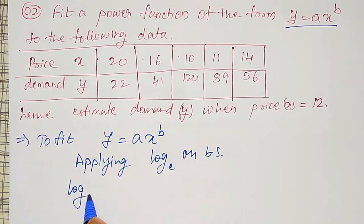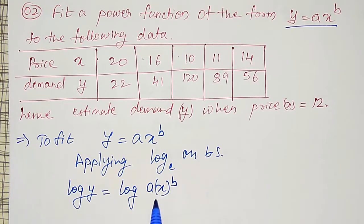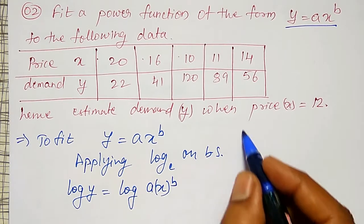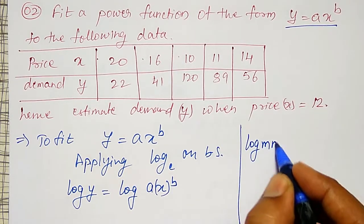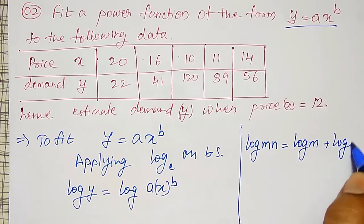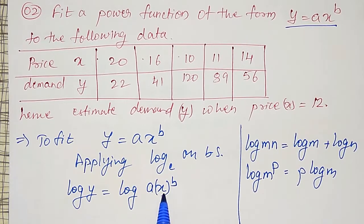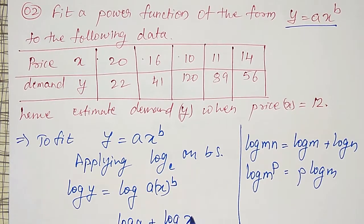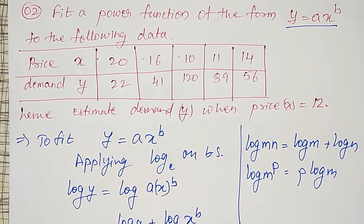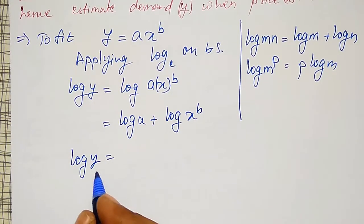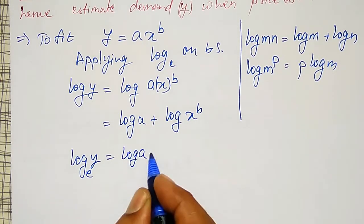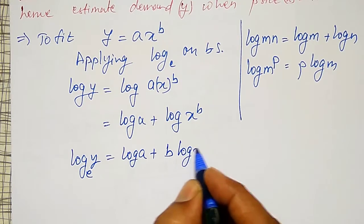Applying log, I will get log y equal to log of ax to the power b. The power b is only for x here. Using the properties of log — log(m·n) = log m + log n, and log(m^p) = p·log m — I can expand this as log a plus b into log x to the base e.